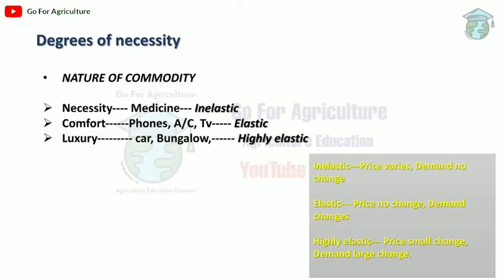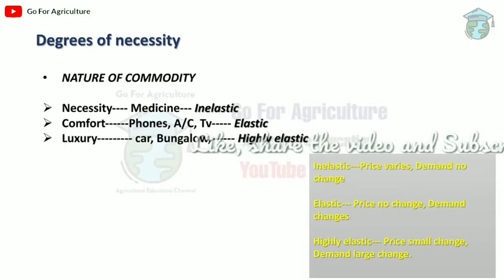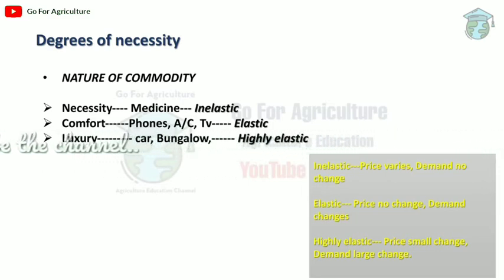This is why comforts are elastic — demand changes even without a price change, based on the consumer's situation. Luxury goods like expensive cars, bungalows, and gold are highly elastic. A small change in price leads to a large change in demand. For example, middle-class families waiting for an iPhone discount — if the price drops from 50,000 to 30,000, the whole family might go buy it.